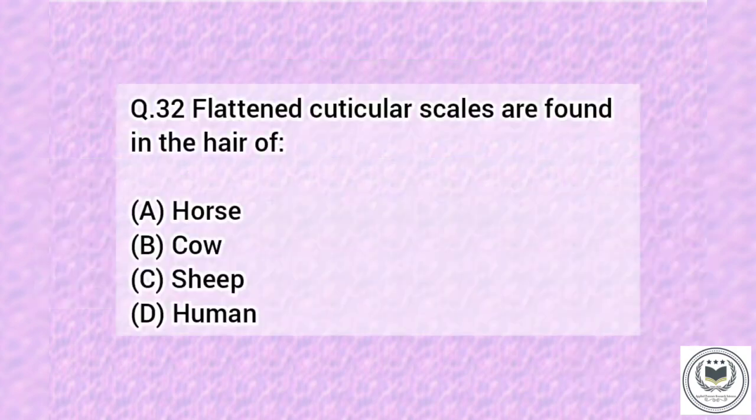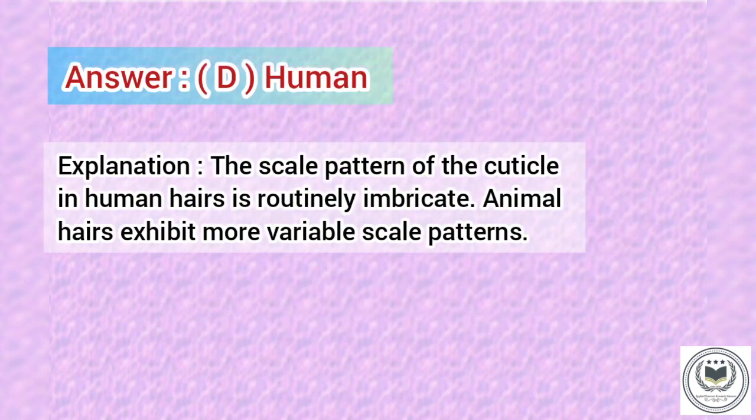Question 32. Flattened cuticular scales are found in the hair of: Option A: Horse. Option B: Cow. Option C: Sheep. Option D: Human. Answer is Option D, Human.